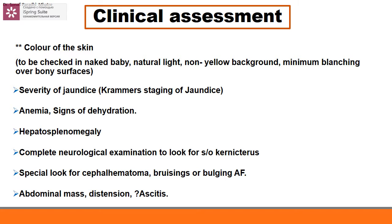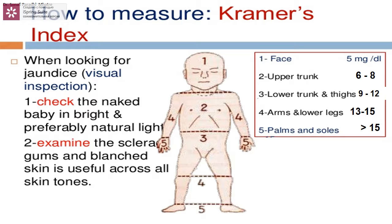Severity of jaundice is assessed by Kramer staging. Also look for signs of anemia, dehydration, organomegaly, complete neurological examination to rule out kernicterus, cephalohematoma, bulging anterior fontanel suggesting intracranial bleed, and bruising. Check for abdominal mass, distension, or flank fullness, as ascites may be present.